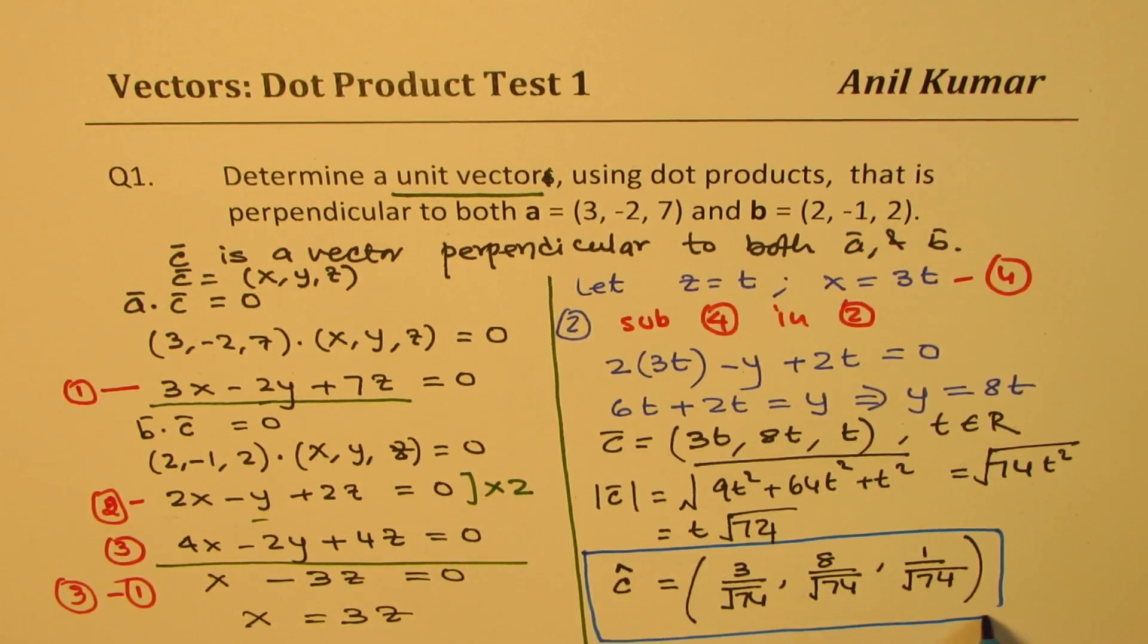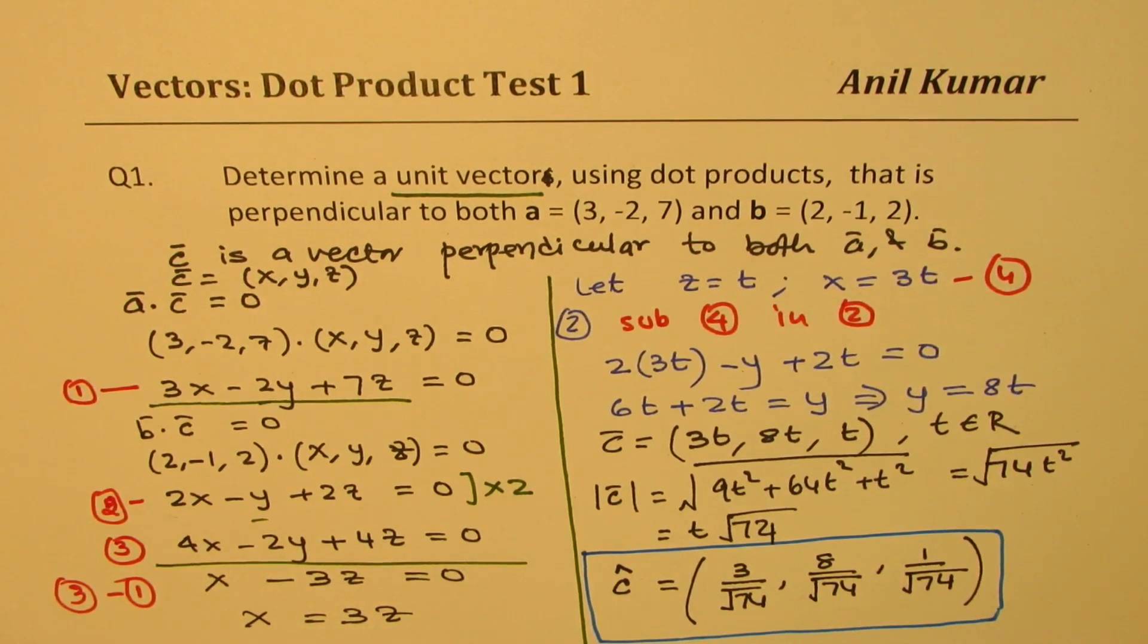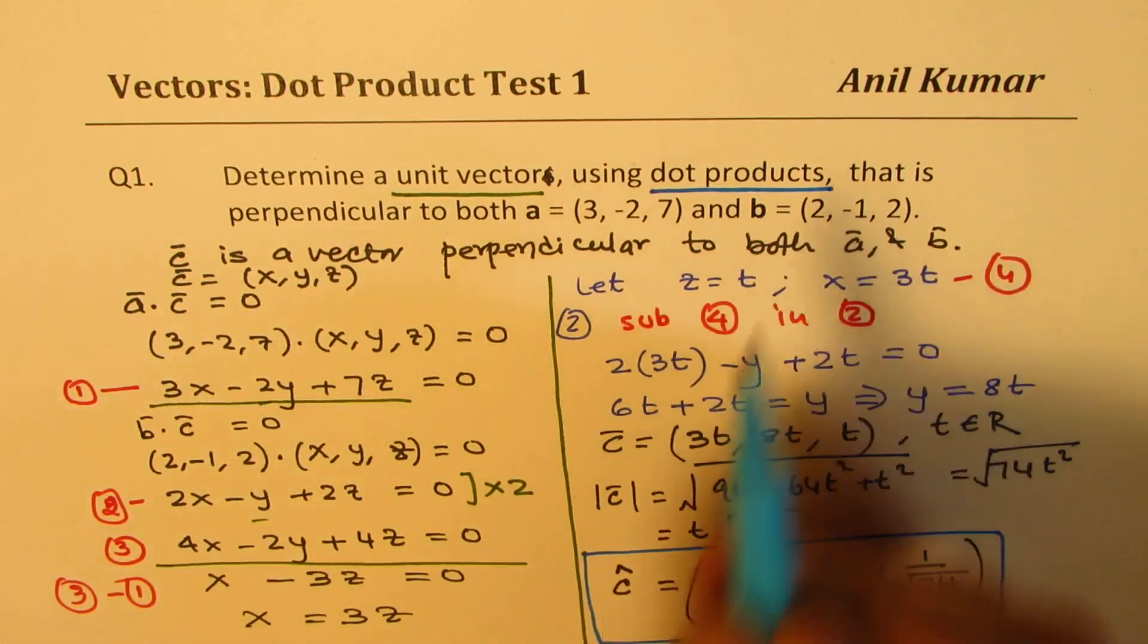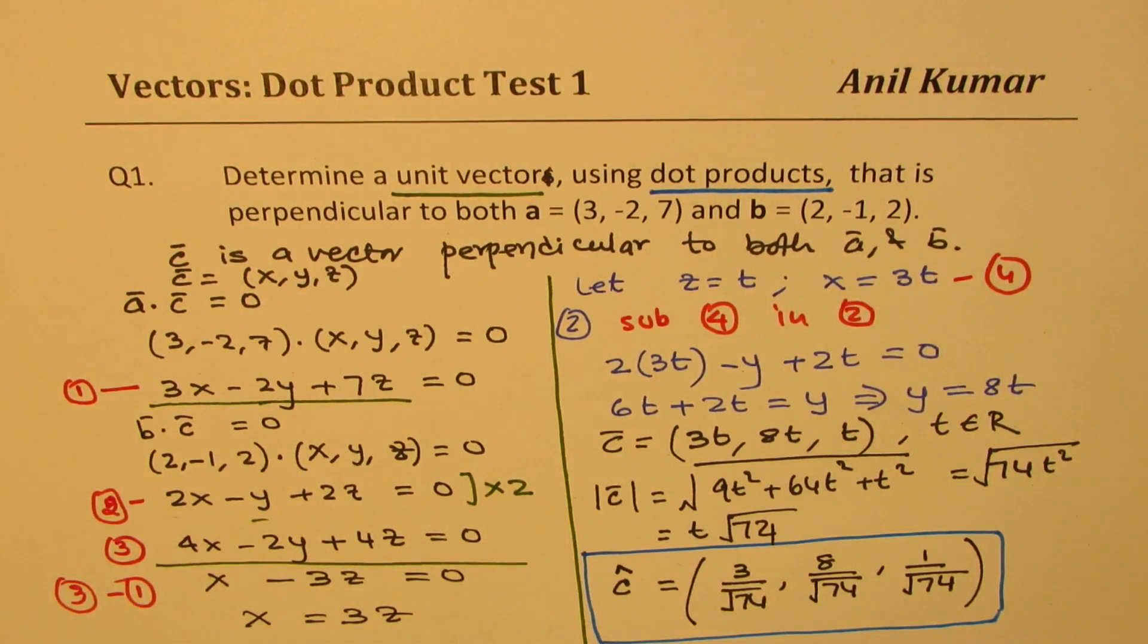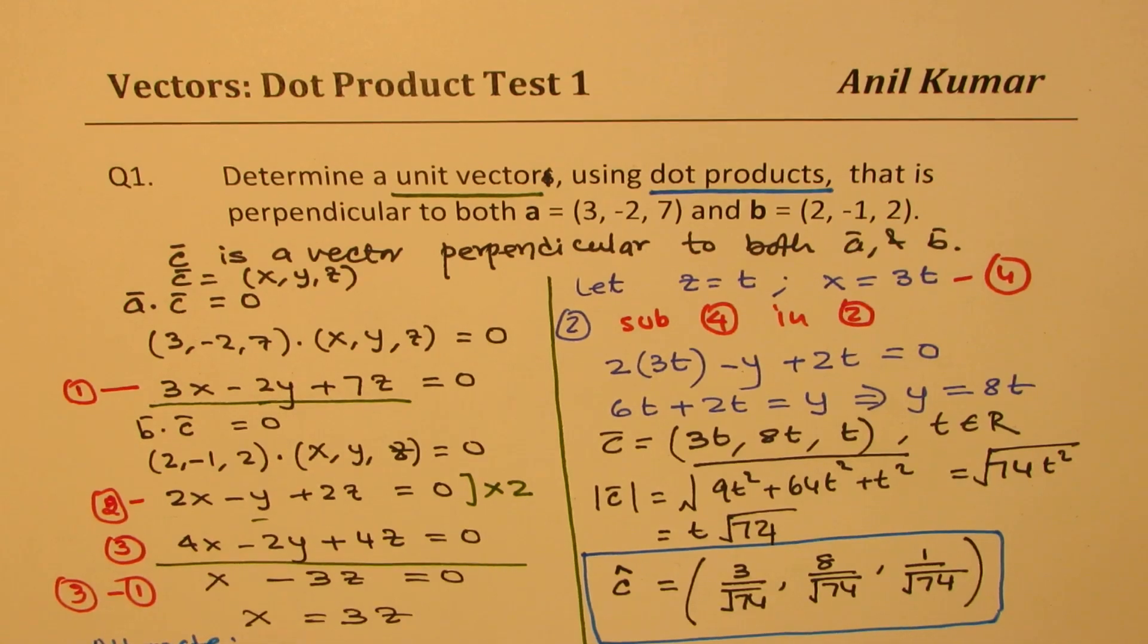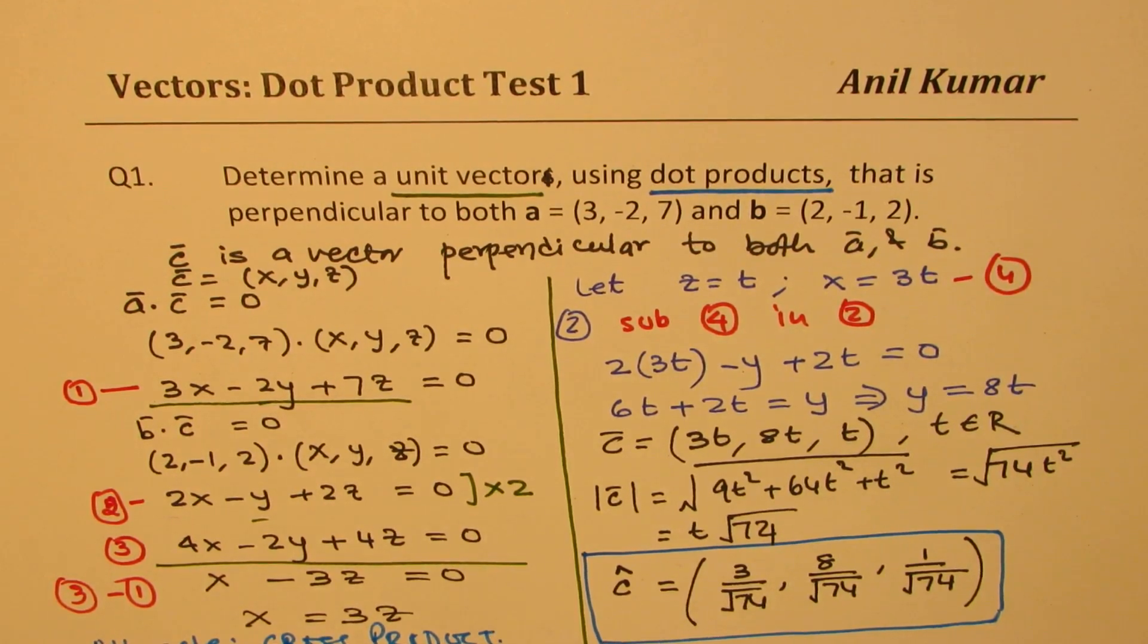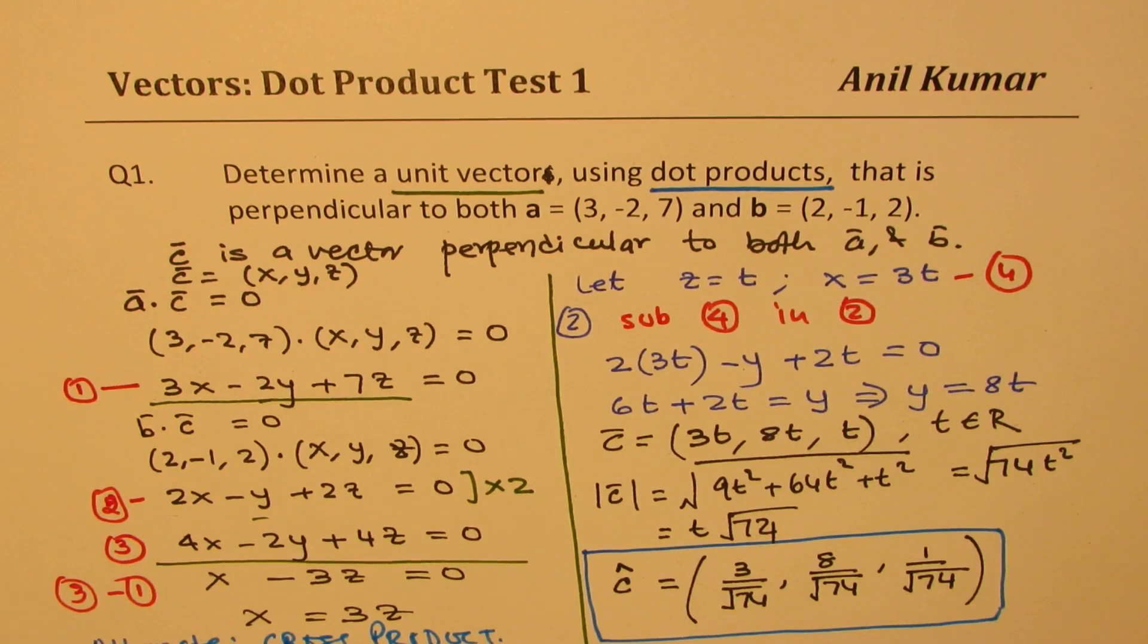And that is how you could do this using scalar products, dot products. Do you get the idea? Now, in the next unit, we'll learn about cross product. So alternate solution is to use cross product, which we are going to learn in the next unit. So for now, I think that should be good enough.